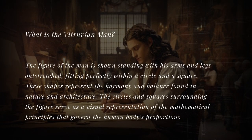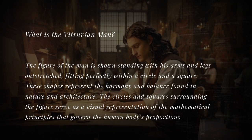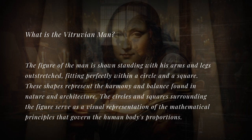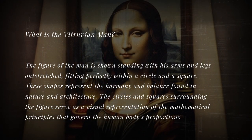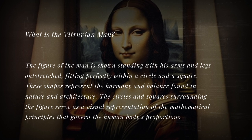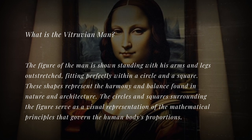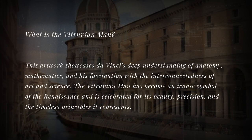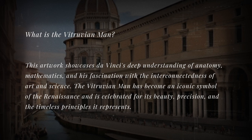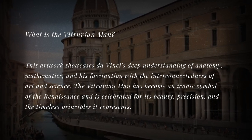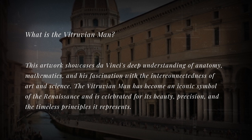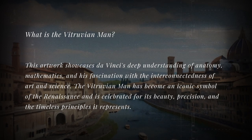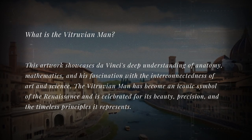The figure of the man is shown standing with his arms and legs outstretched, fitting perfectly within a circle and a square. These shapes represent the harmony and balance found in nature and architecture. The circles and squares surrounding the figure serve as a visual representation of the mathematical principles that govern the human body's proportions. This artwork showcases da Vinci's deep understanding of anatomy, mathematics, and his fascination with the interconnectedness of art and science. The Vitruvian Man has become an iconic symbol of the Renaissance and is celebrated for its beauty, precision, and the timeless principles it represents.